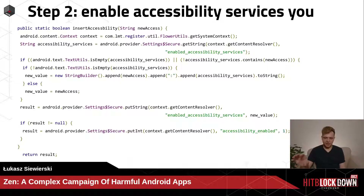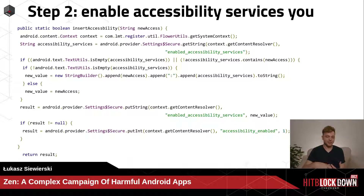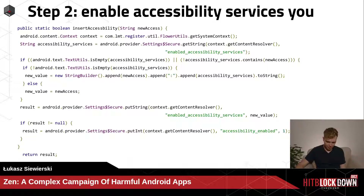The app first gets the list of enabled accessibility services, then adds its own accessibility service and saves it as an enabled service, then sets accessibility_enabled to one. This adds an element to the list without the user being aware.